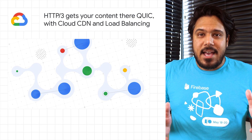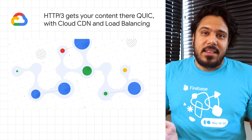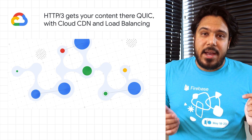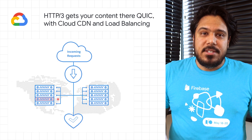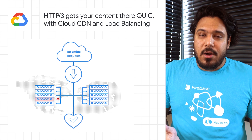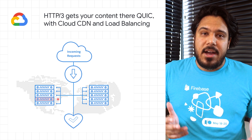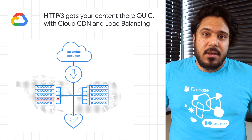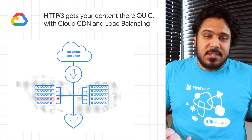Google Cloud CDN and HTTPS load balancing now include support for HTTP 3.0. This update brings improvements to things like streaming video, image serving, and API scaling behind Cloud's global infrastructure.